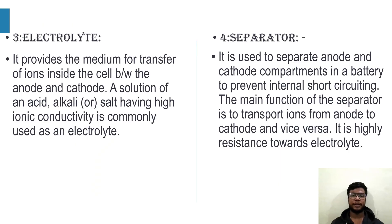Electrolyte: It provides the medium for transfer of ions inside the cell between the anode and cathode. A solution of acid, alkali, or salt having high ionic conductivity is commonly used as the electrolyte. Separator: It is used to separate the anode and cathode compartments in a battery to prevent internal short circuiting. The main function of the separator is to transport ions from anode to cathode and vice versa.